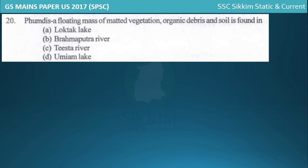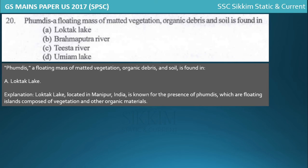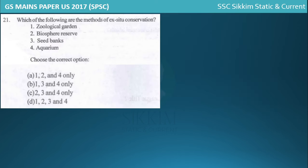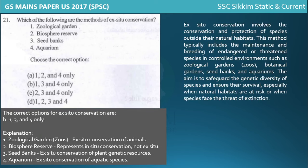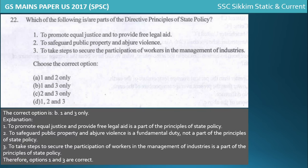The question about a floating mass of matted vegetation, organic debris, and soil refers to Loktak Lake. For ex-situ conservation, the correct answer is options one, three, and four. Biosphere reserves are not a method of ex-situ conservation. Ex-situ conservation involves the conservation and protection of species outside their natural habitat. Zoological gardens, seed banks, and aquariums are ex-situ methods.